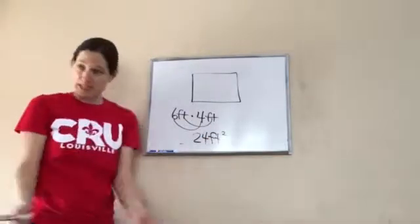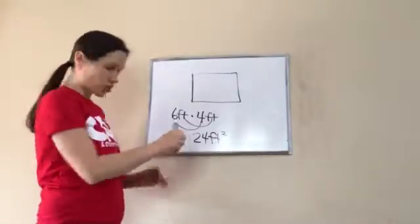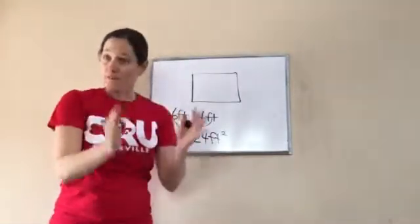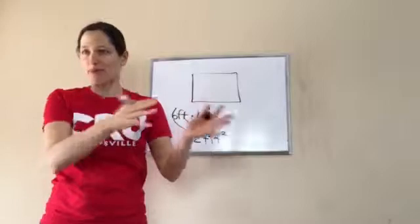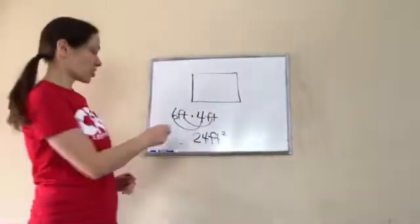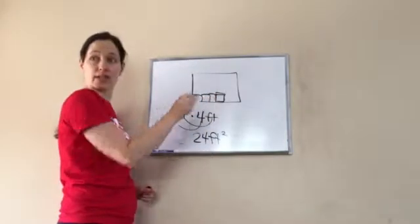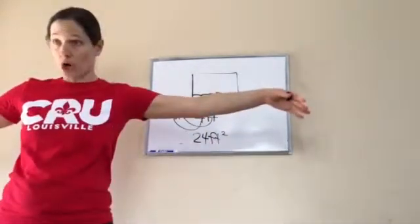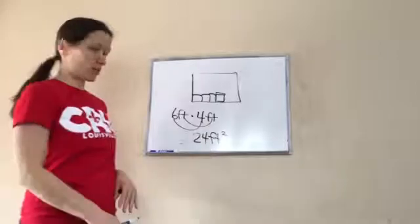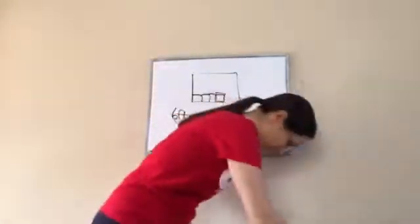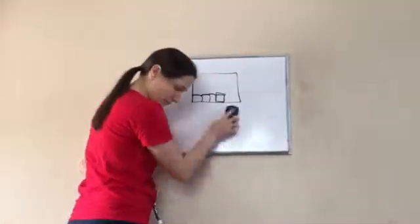It's 6 times 4, which is 24, and feet times feet, which is feet square. So I need a piece of carpet that has 24 square feet in it. Not feet, but square feet. You get what I'm saying? So there will be 24 of these squares inside of that to show you how big the carpet should be.